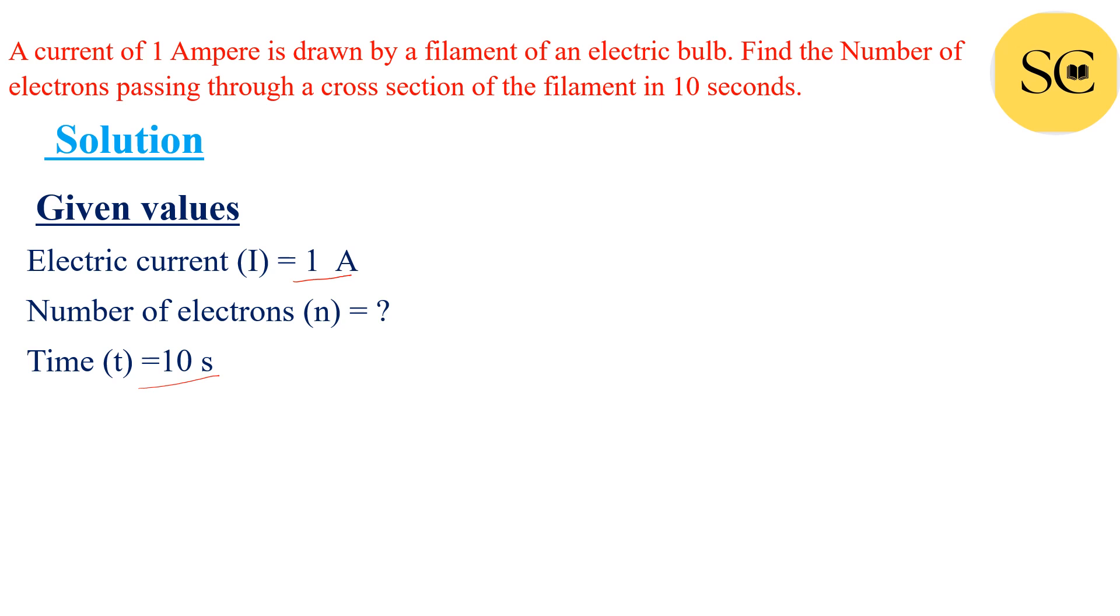We will have to find number of electrons represented by n. Our formula is I = ne/t. In this formula we have the value of I and t, but we don't have the value of e.